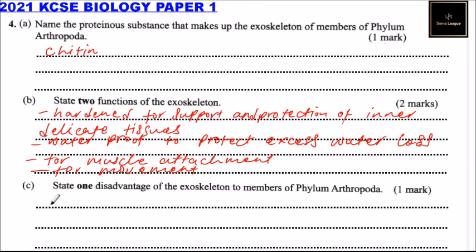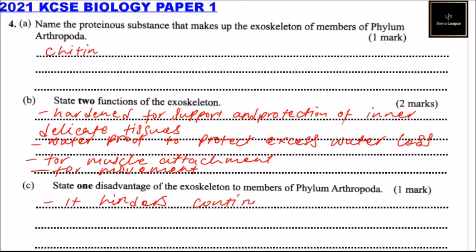Part C: State one disadvantage of the exoskeleton to members of phylum Arthropoda. One disadvantage is that it does not allow continuous growth. That is how you answer that question.